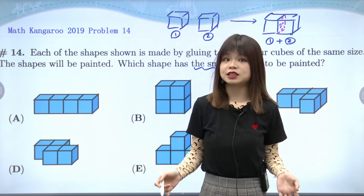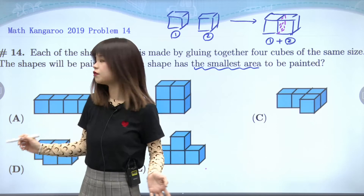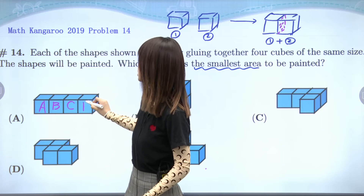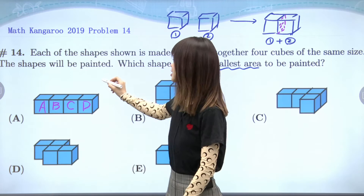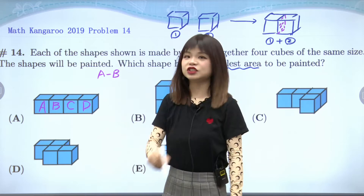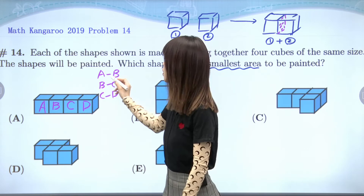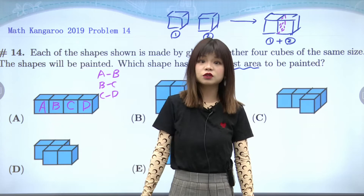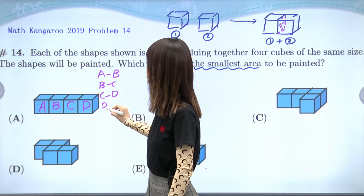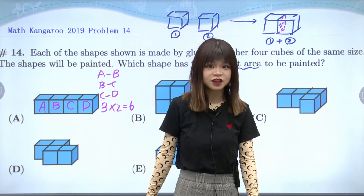Now we can start with our choices to see how many kissing faces we have. For choice A, we have cube A, cube B, cube C, and cube D. Which two cubes are connecting? Ting Ting knows that A and B are connecting. B and C, and C and D as well. So in total we have three kissing pairs. And we know that for each pair of kissing faces we will have two hidden faces, so the total number of hidden faces will be three times two equals six.